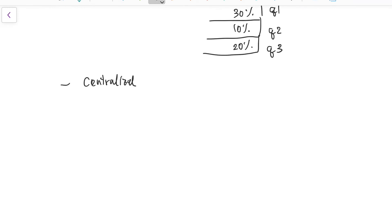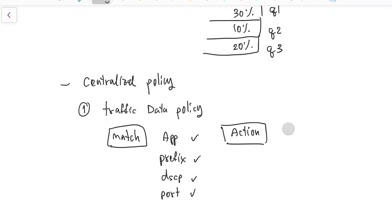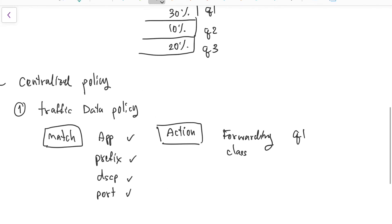Once we have configured the localized policies, then we're going to go to the second step, going to the centralized policies. Then we have traffic data policies there. Then we do a matching the applications or the prefix list or even the port number or anything that can be selected into the matching statement on the traffic data policies. We put the action there.